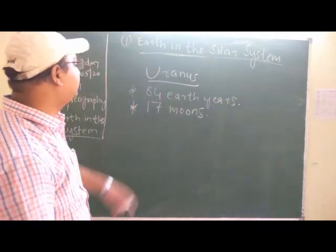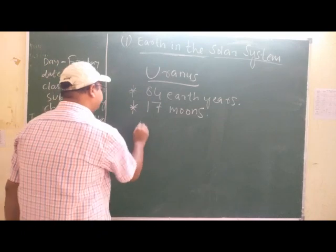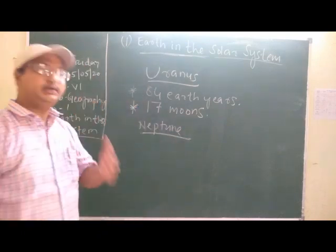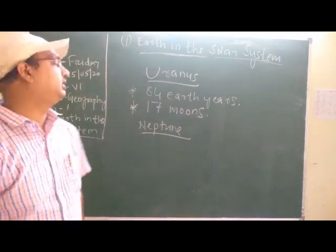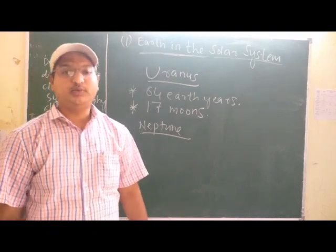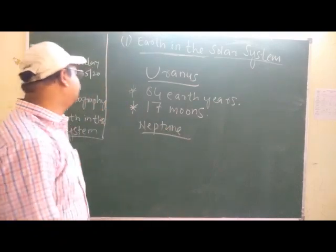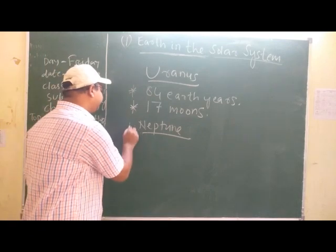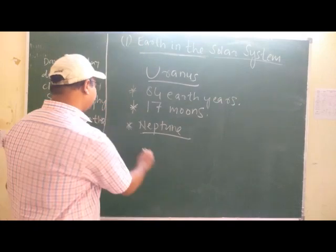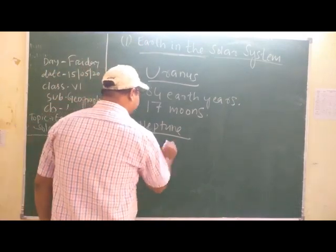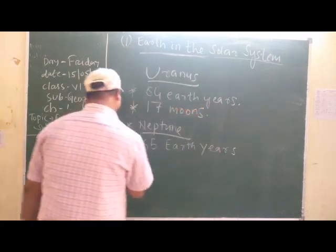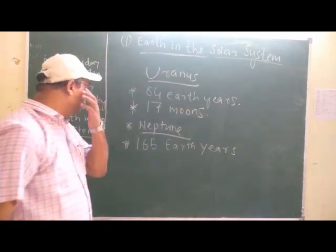Next we will study Neptune. Neptune is now the last planet — before, Pluto was considered the last or farthest planet in the solar system, but it is now considered a dwarf planet and has been removed from the solar system. Neptune is the last planet. It takes 165 Earth years to revolve around the sun — just compare: if Earth takes 1 year, Neptune takes more than 165 years for completing one revolution.